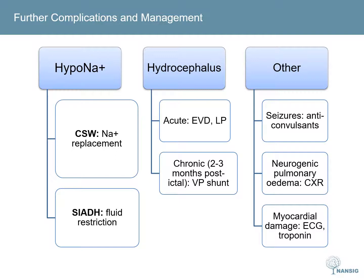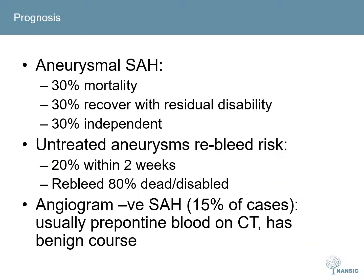ECG changes can occur with subarachnoid haemorrhage, as can troponin elevations. This can cause confusion in patients who have collapsed — often when they have an ECG change or troponin rise, they are felt to have a cardiac cause of their collapse and are given aspirin and taken to a cardiac catheterisation lab, when the actual diagnosis is subarachnoid haemorrhage. Subarachnoid haemorrhage has significant morbidity and mortality, so it is important to make the diagnosis properly and instigate appropriate treatment. An untreated aneurysm carries a significant risk of re-bleeding in the first two weeks, and patients who re-bleed have a higher rate of death and disability. Non-aneurysmal subarachnoid haemorrhages have a very good prognosis and patients often make a full recovery.